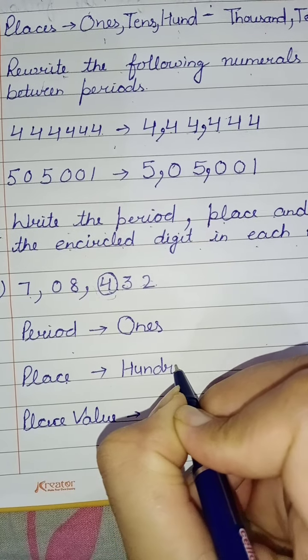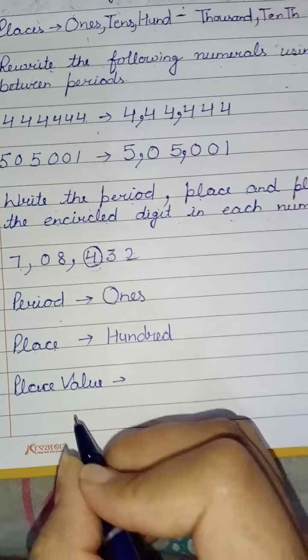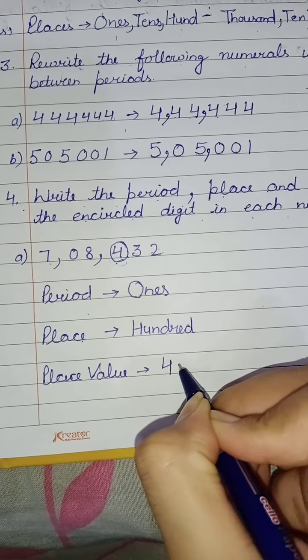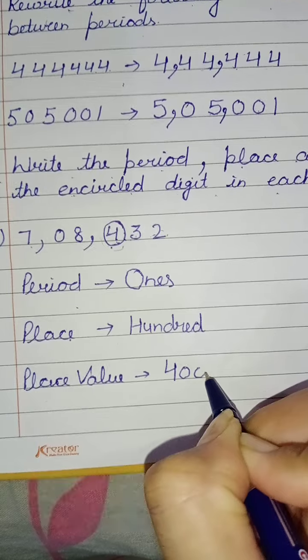You can write here: hundreds. Now you have to tell the place value. This 4 has a place value of 400. So our place value will be 400. In this way, you have to do the rest of the sums in this question.